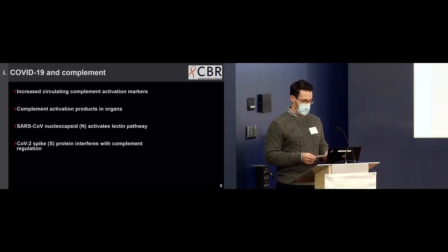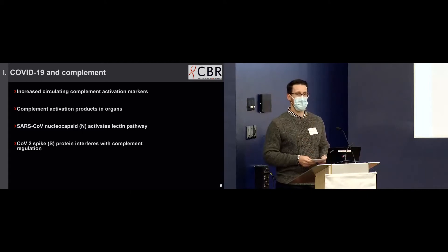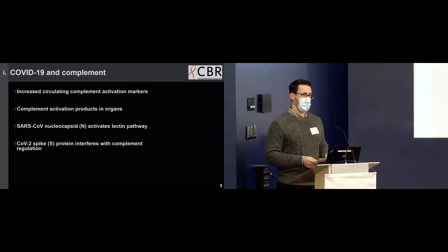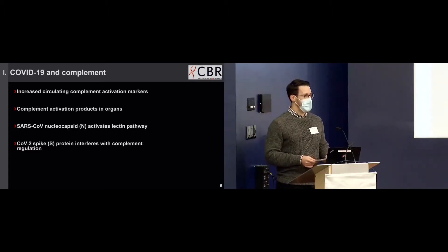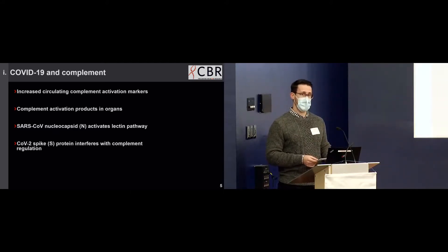The mechanisms through which complement is activated by SARS-CoV-2 infection are unclear, but some studies have found elevated complement activation markers in the blood of COVID-19 patients that increase with disease severity. Large amounts of activated complement proteins have been found in the lungs, kidneys, and liver of patients who succumb to COVID-19. In vitro studies have demonstrated that the closely related SARS-CoV nucleocapsid protein can bind to MASP2, triggering activation through the lectin pathway. And Dr. Brodsky's group showed that the SARS-CoV-2 spike protein contributes to elevated alternative pathway activity, potentially by interfering with its regulation by factor H.